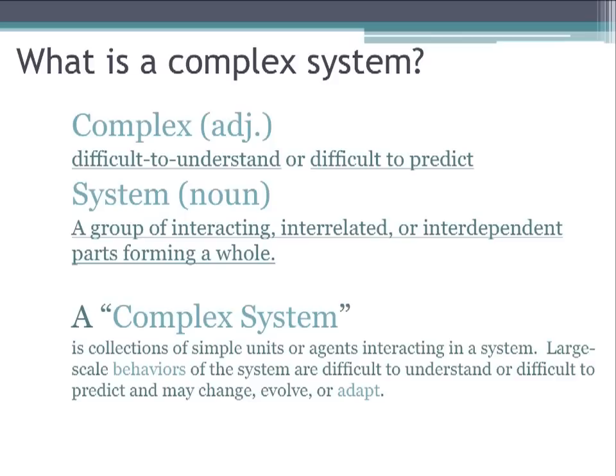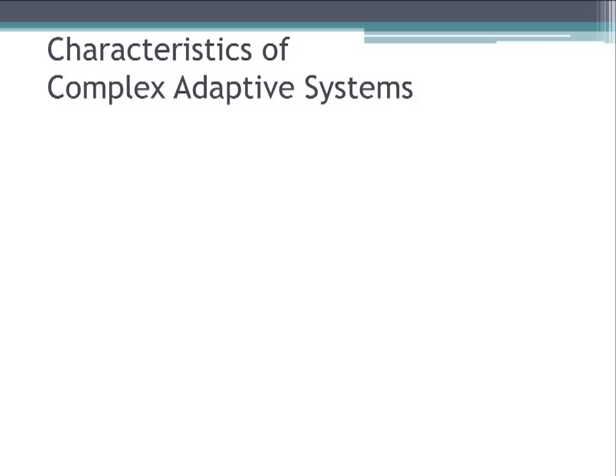A complex system is more than the sum of its two parts — 'complex' and 'system.' Sometimes people think a watch or clock is a complex system because it has many interrelated parts that make up a whole. But a watch is not a complex system — it doesn't change, it doesn't evolve, and it doesn't adapt.